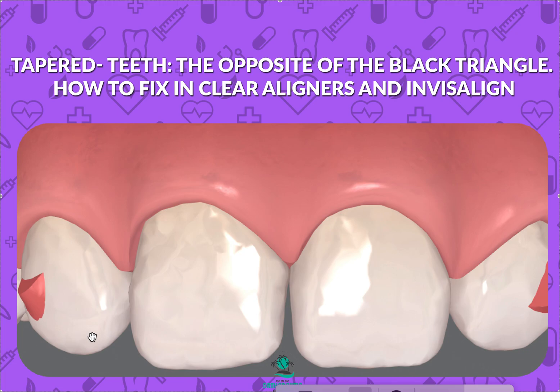One thing you can do if you're using Invisalign is use the Invisalign export feature — I do have videos on that in my YouTube channel at Straight Smile Solutions. Search 'export' to find them. The export feature allows you to export the final STL — the version where everything is done — and send it to your lab. Not all labs take STLs from Align Technology's iTero, so ask them first. Keep in mind that once you activate that STL, Invisalign has a pop-up alert saying they will bill you if you do not accept the treatment.